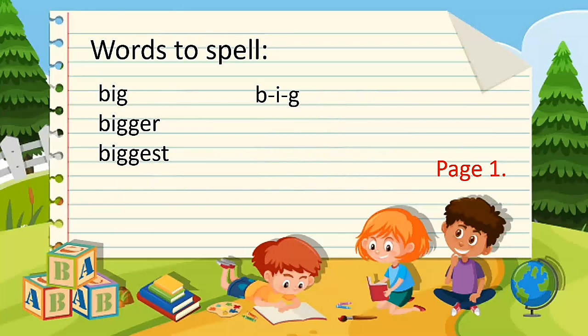Next word is bigger, bigger, bigger. Spell. B, I, G, G, E, R. B, I, G, G, E, R. Bigger, bigger.